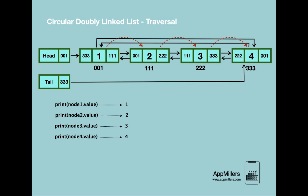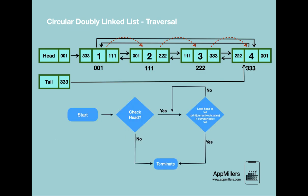You might wonder why we check at each step whether the current node is the last node. This is because the last node in a circular doubly linked list points back to the first node, so if we don't include this check, the traversal would continue infinitely. To prevent this, we add an if condition at each step to check whether we have reached the last node.